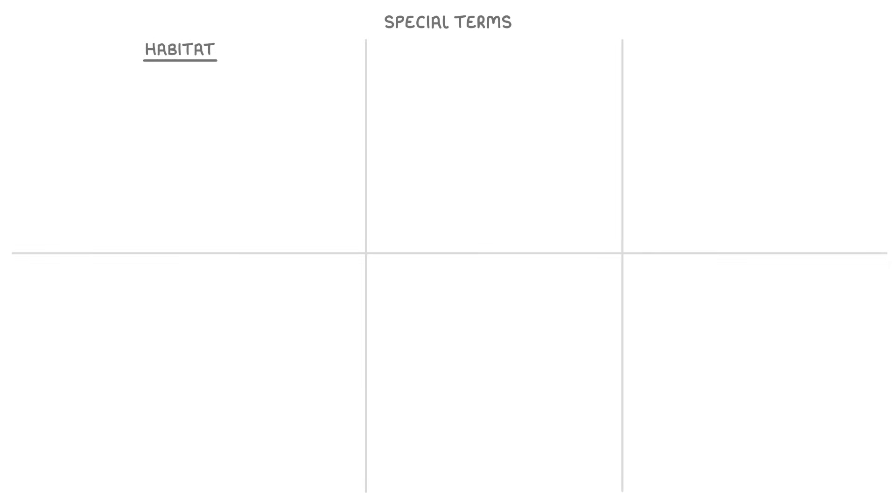Before we go any further, it's worth running through some of the special terms that you need to know for ecology. The first is habitat, which is just the place where an organism lives.